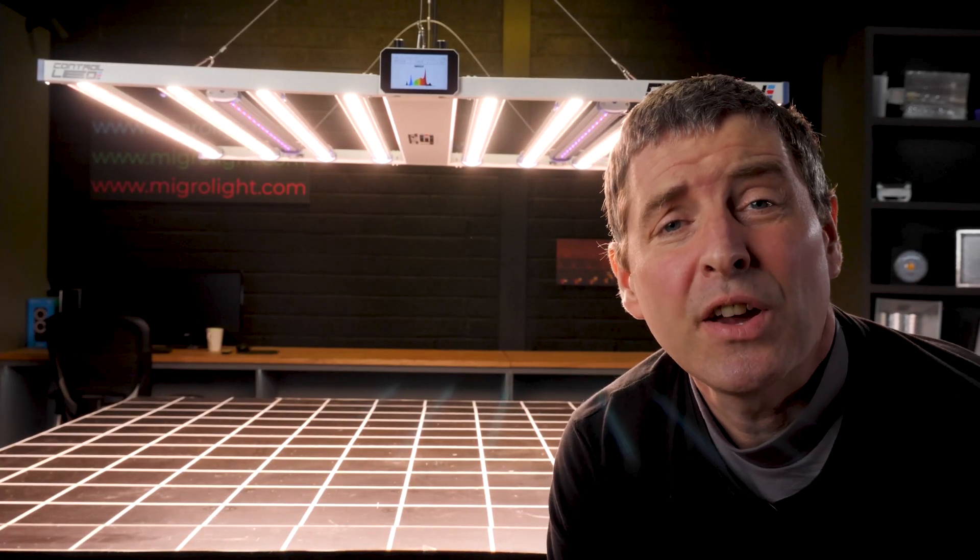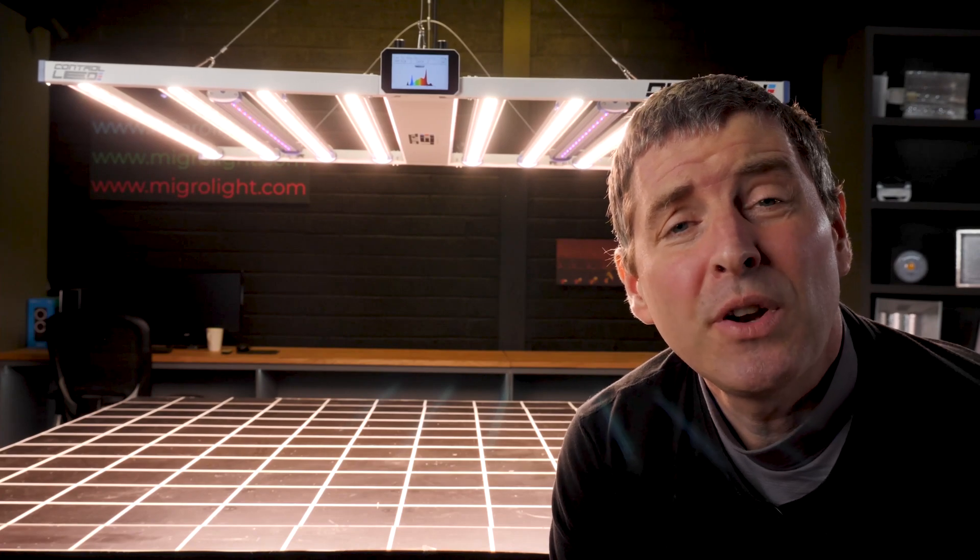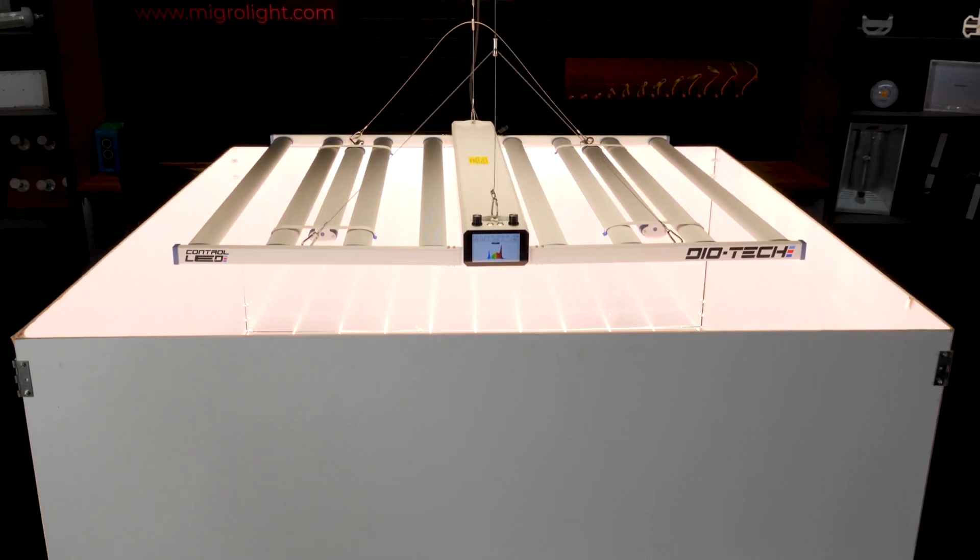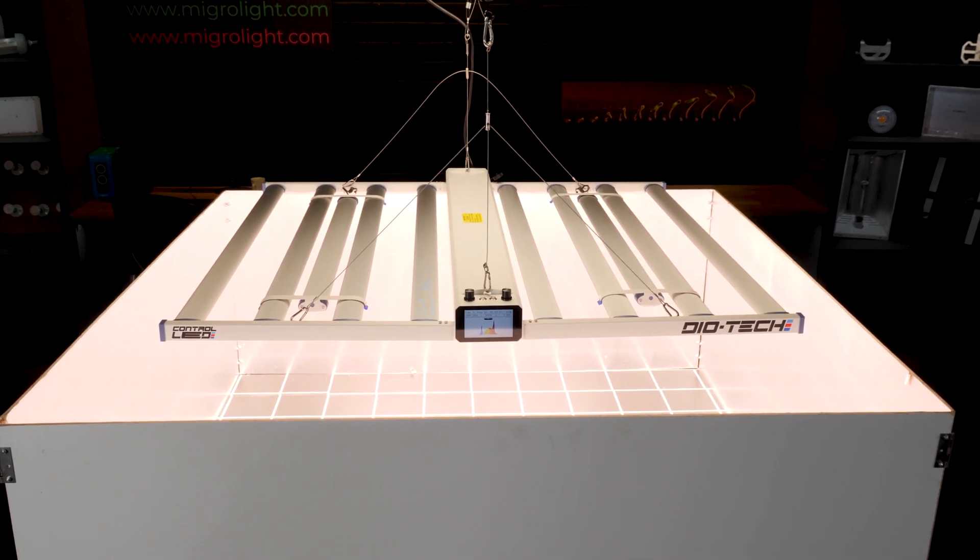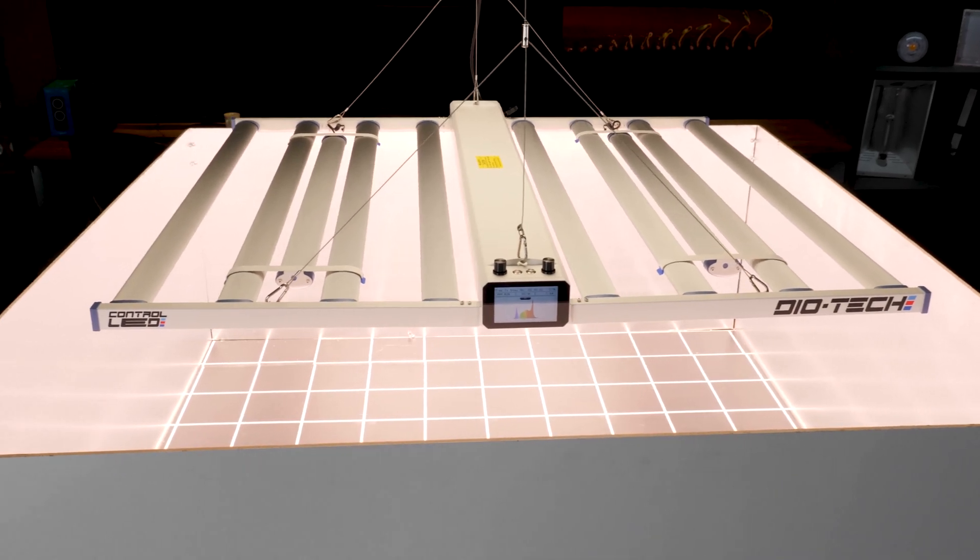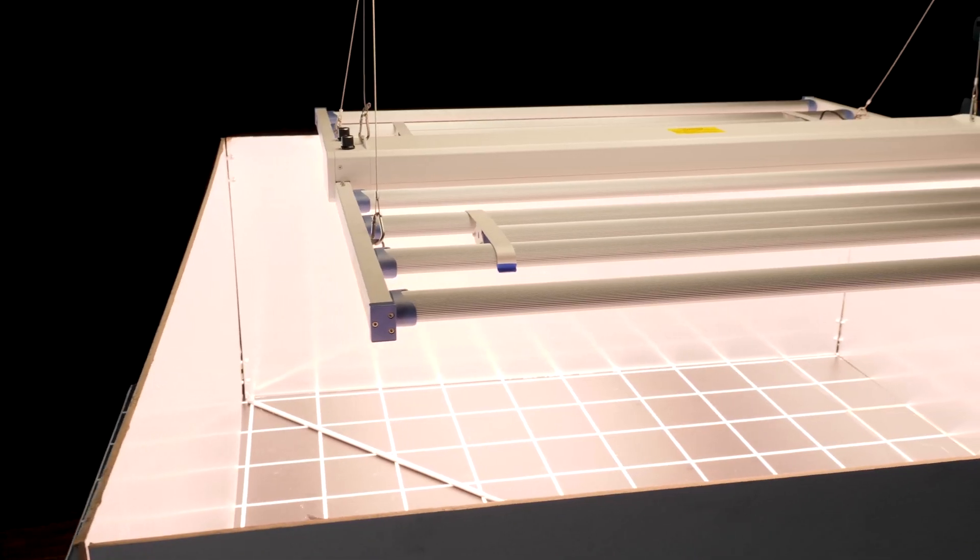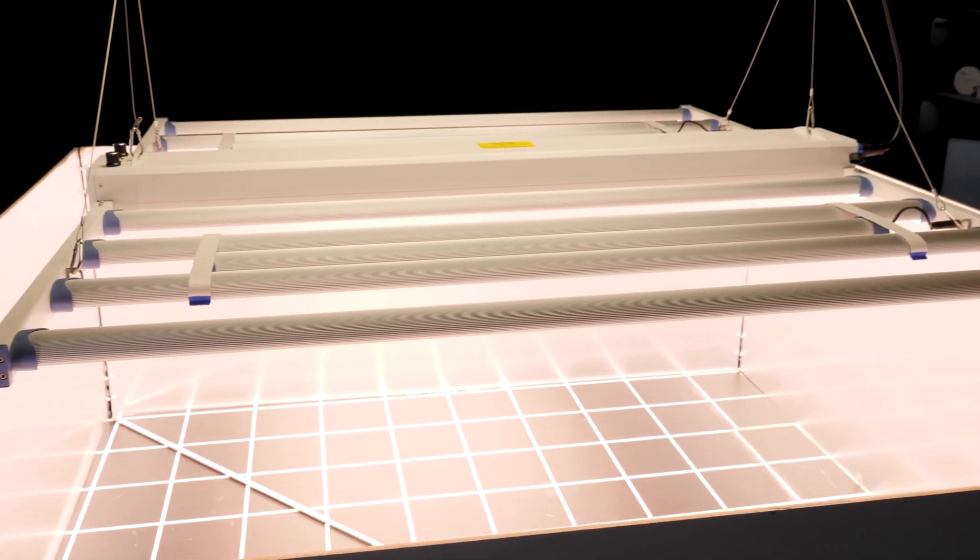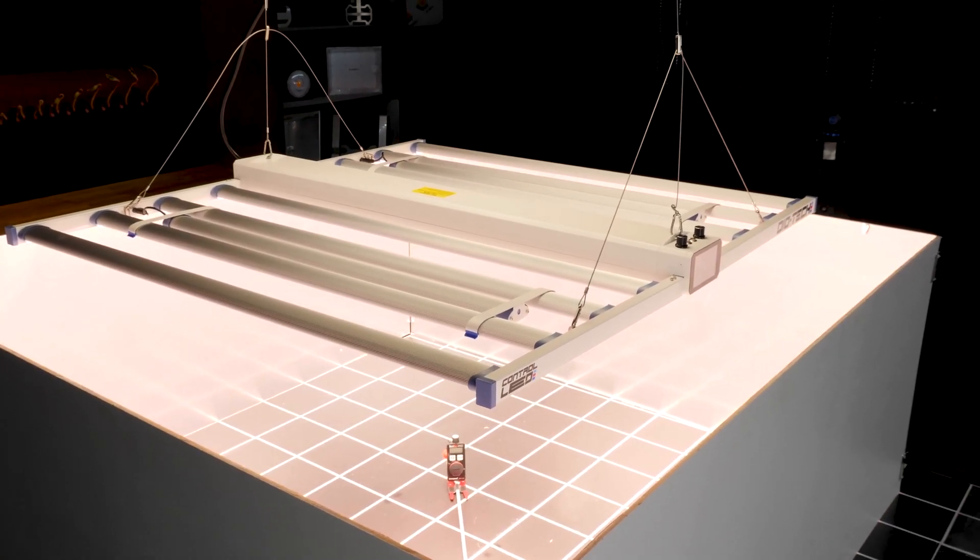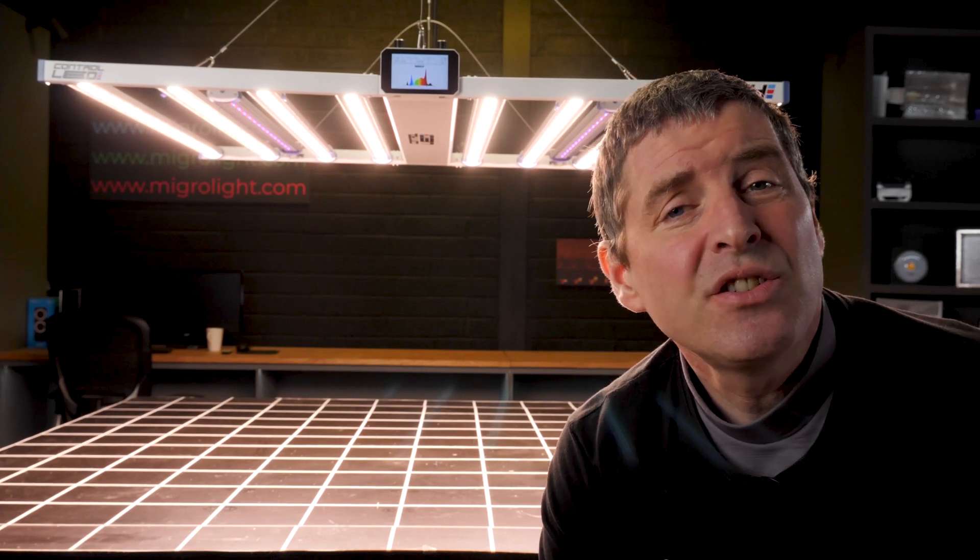This light is a big wattage light and it's designed for a big grow area. So I put it into the 5x5 test area, that's 1.5 by 1.5 metres, and hung at its optimum hanging height of 60 centimetres or 2 foot. I found that optimum hanging height in the manual to be perfect, just exceeding a thousand micromoles in the centre but delivering a good spread all round to the edges.